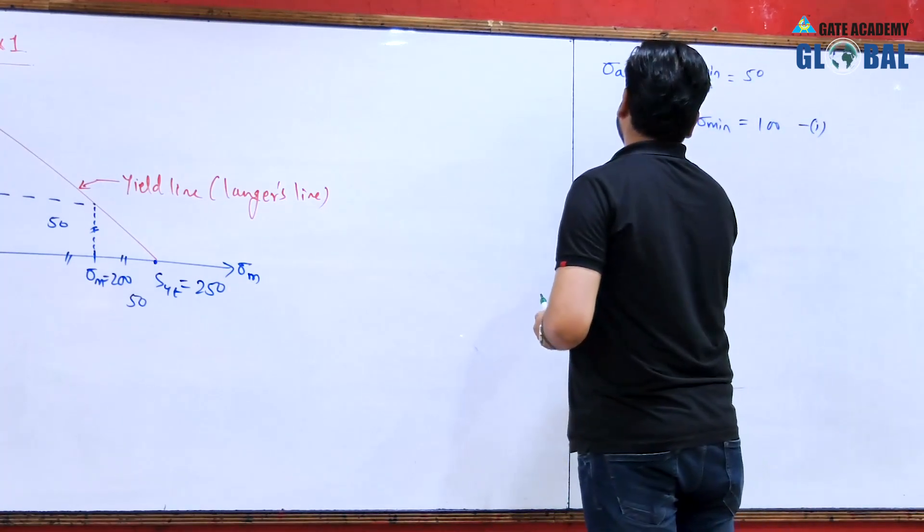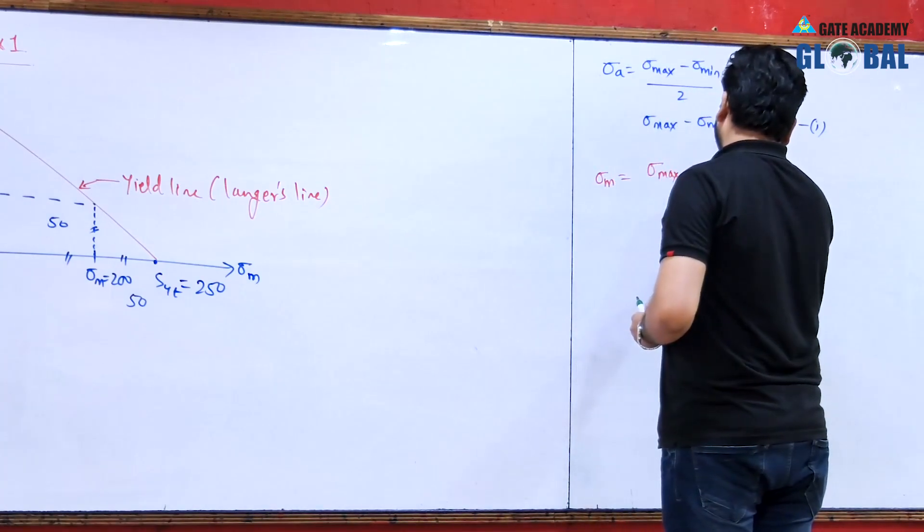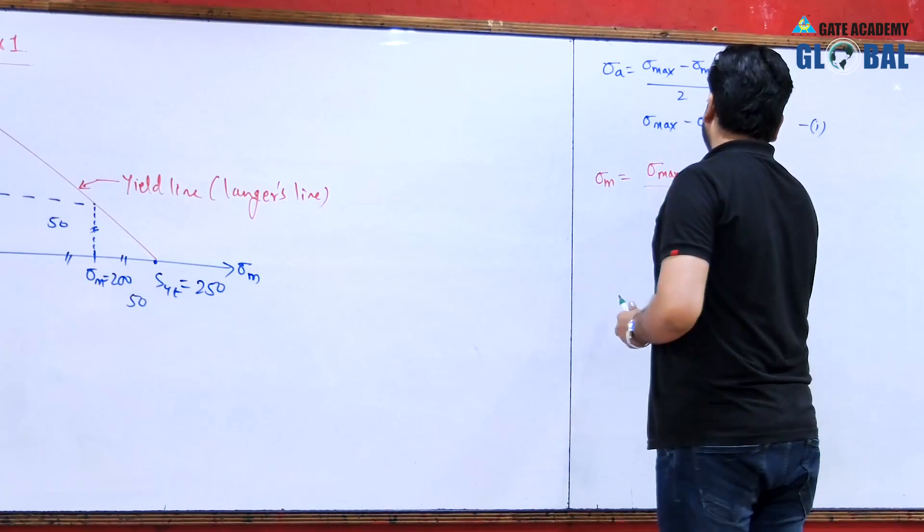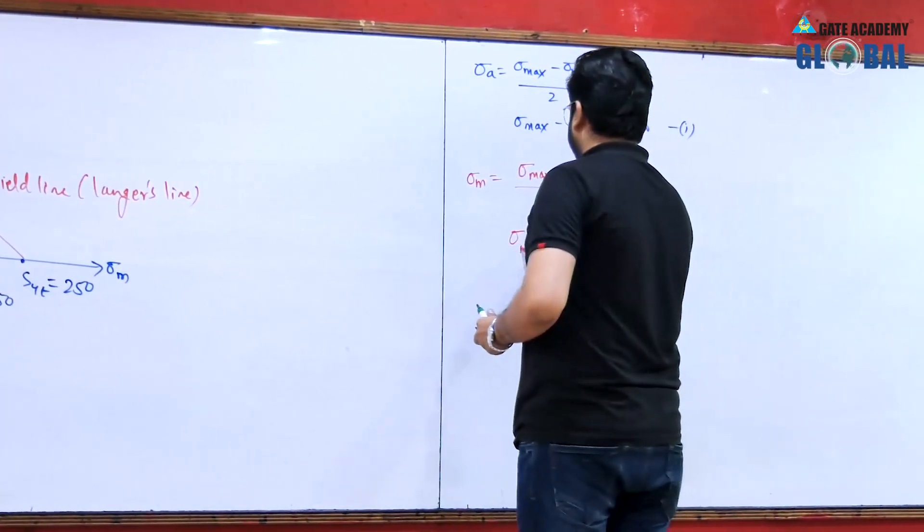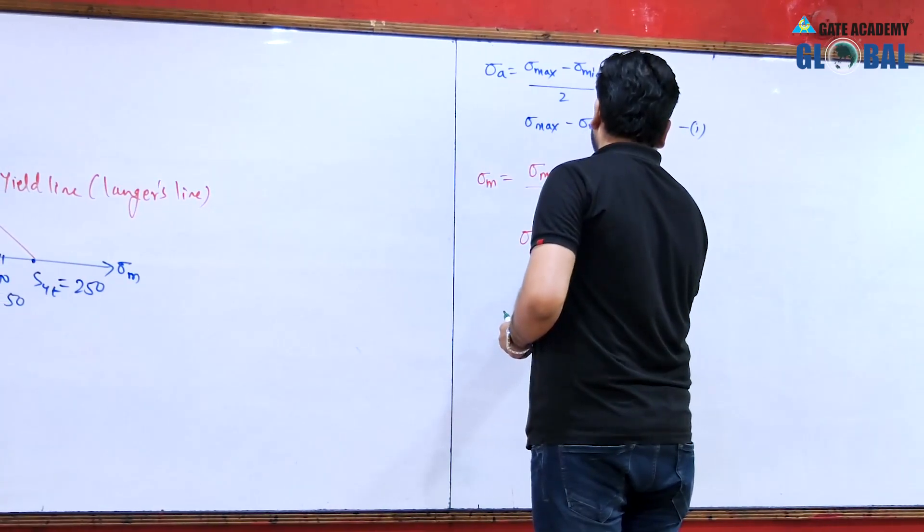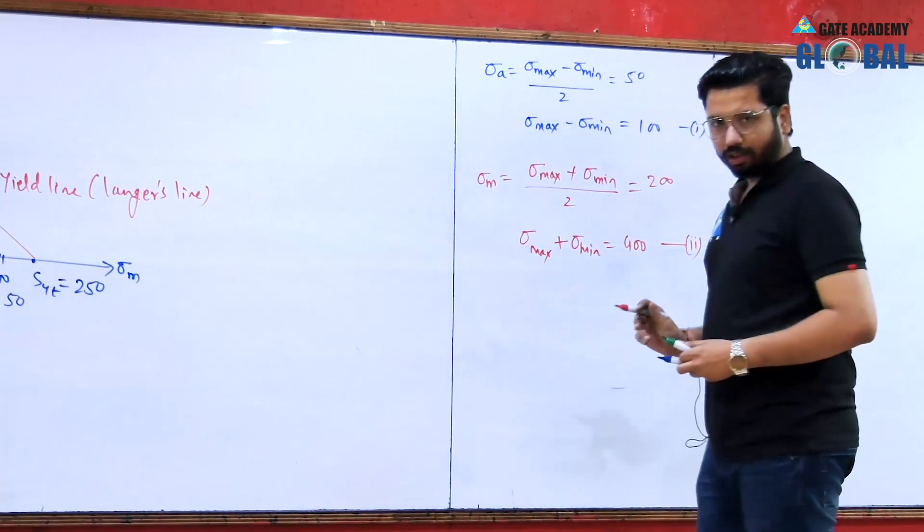Again sigma m mean stress is sigma max plus sigma minimum divided by 2 and this is equal to 200. From here I can write sigma max plus sigma minimum is equal to 400. This will be your equation number 2.